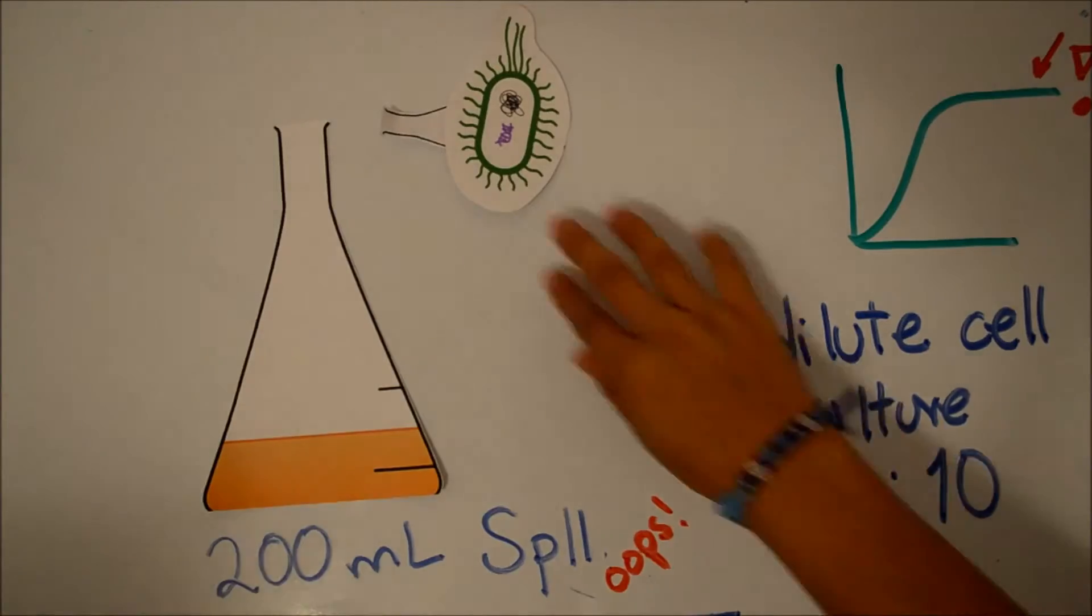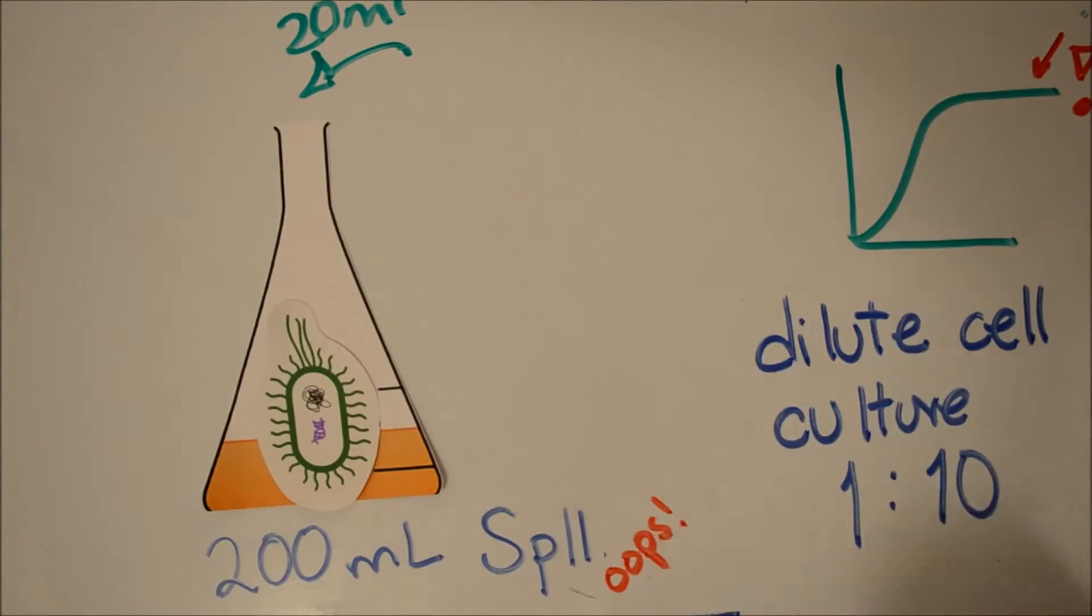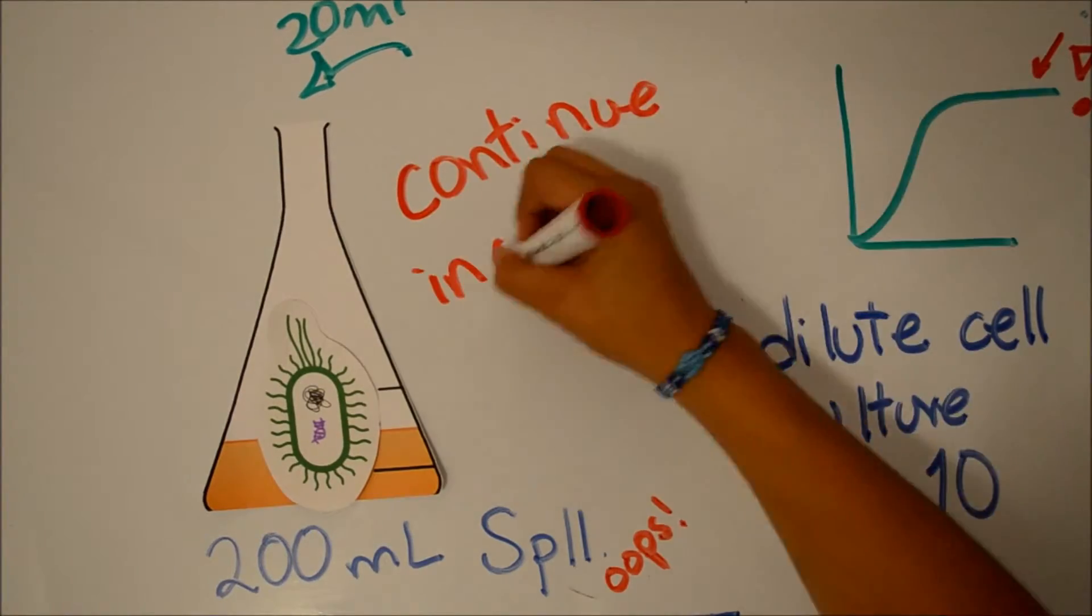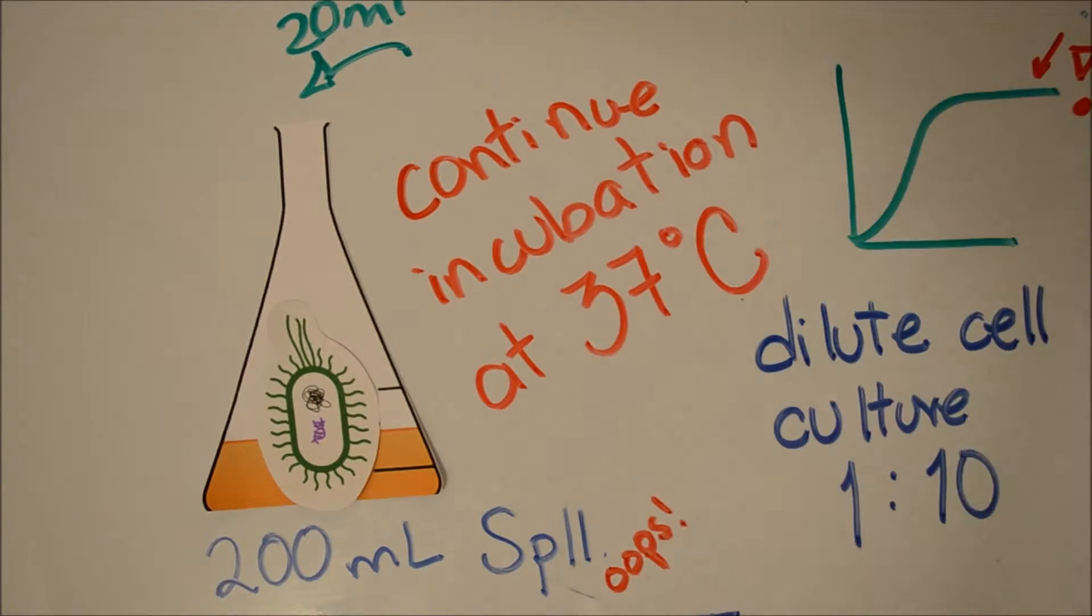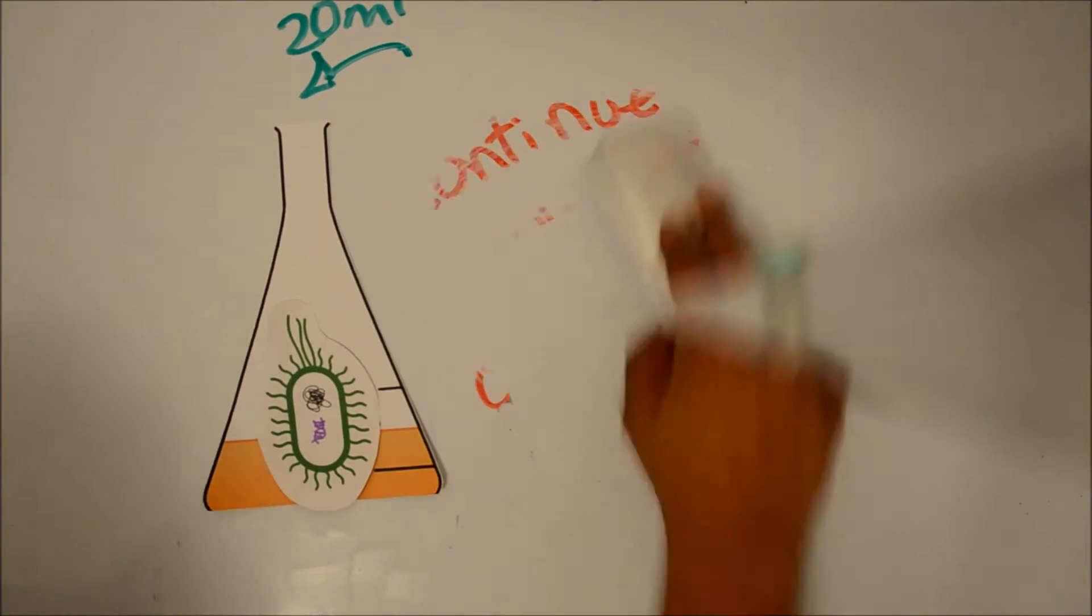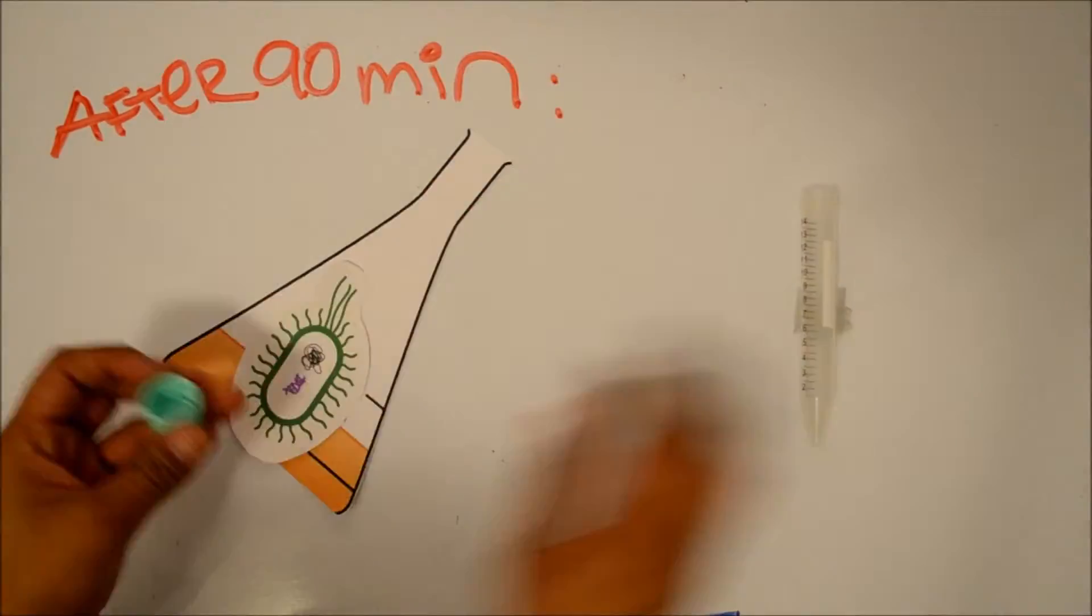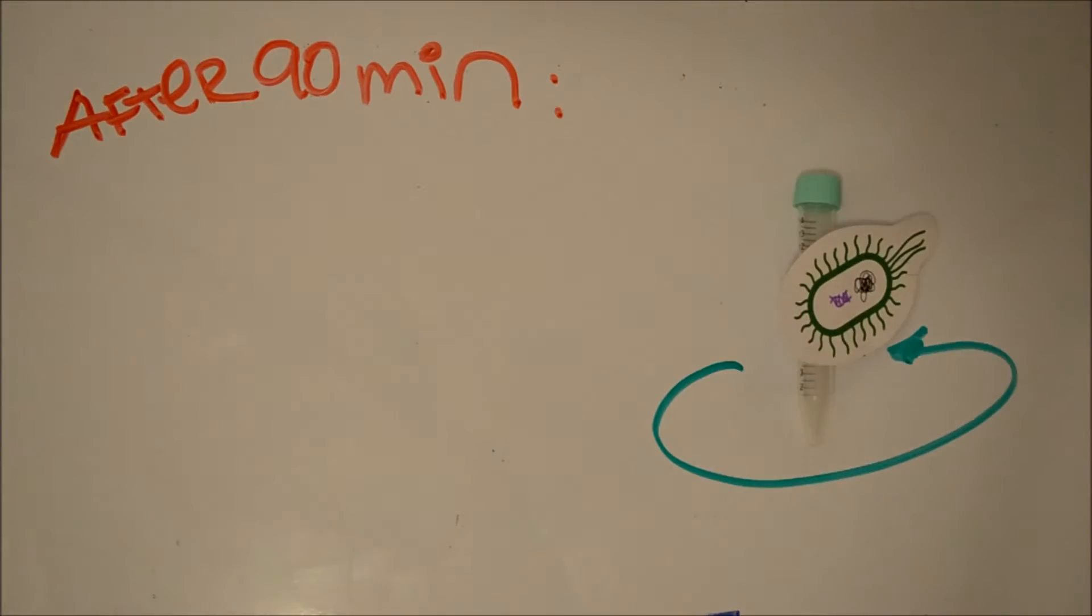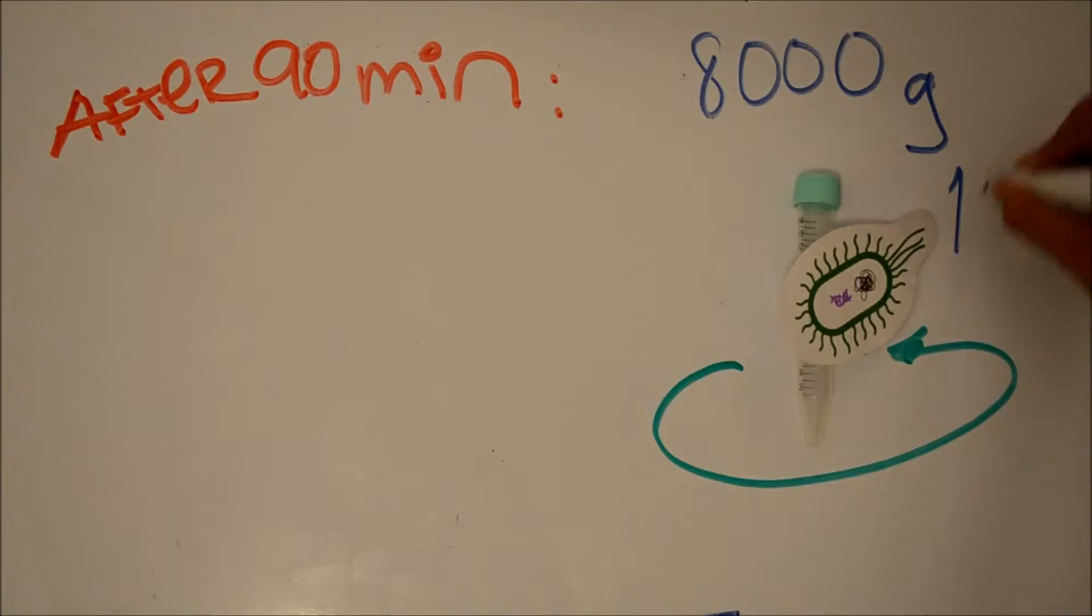Inoculate 300 ml of pre-warmed SPC2 medium with 30 ml of stationary phase culture and continue incubation at 37 degrees with slower aeration. After 90 minutes of incubation, pellet the cells by centrifugation at 4 degrees.